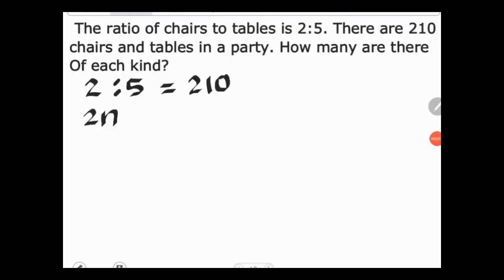Now find how many chairs are in the party. 2 times n equals, and n is 30. So 2 times 30 equals 60. There are 60 chairs.